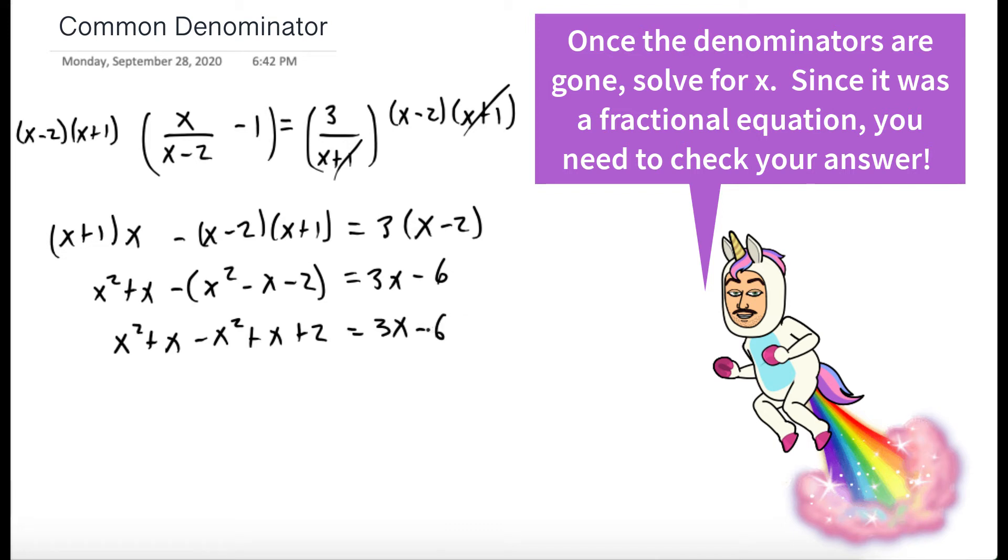Let's combine like terms. So notice we have an x squared minus an x squared. That's going to go to 0. And we have an x plus x. That's 2x plus 2 is equal to 3x minus 6.